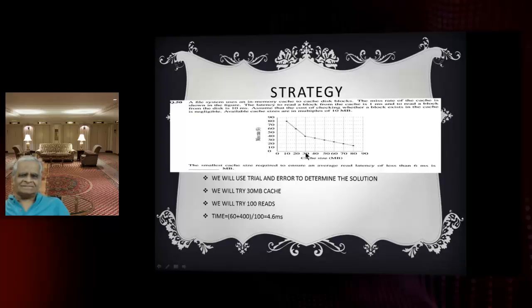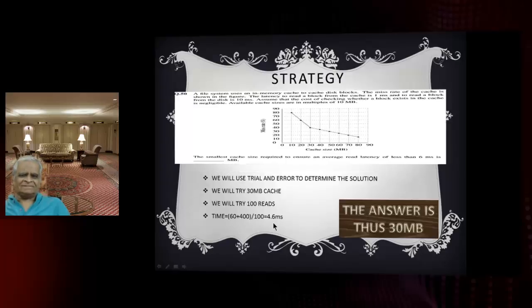The 30 MB cache: 40% is the miss rate. So 400 milliseconds for disk reads, 100 reads total. To read from the cache, 60 milliseconds. 460 total, so 4.6 milliseconds average. This is less than 6 milliseconds.